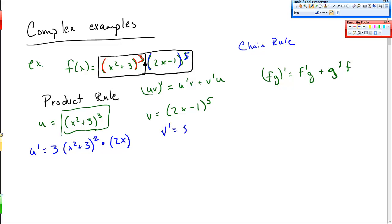Then v prime, same thing. 5 out front from this exponent, 2x minus 1. Subtract 1 from the exponent. And multiply by the derivative of the inside, which is just 2. And I'll simplify these. I'll combine this 2 and 2x and 3. So I'll get 6x, x squared plus 3 squared. And v prime here is 10 times 2x minus 1 to the fourth.